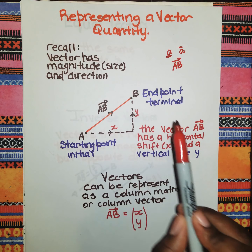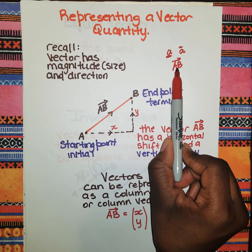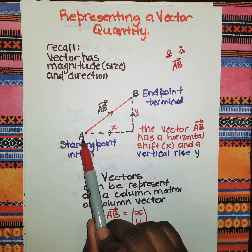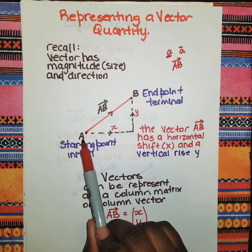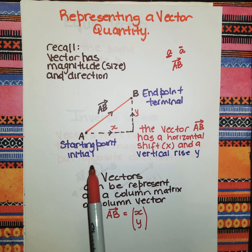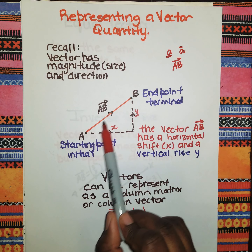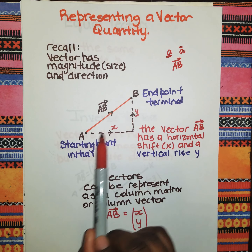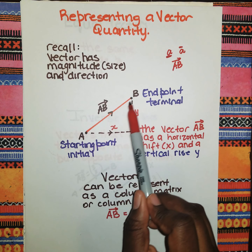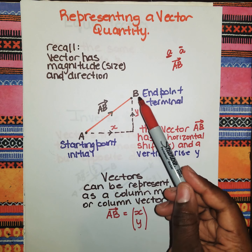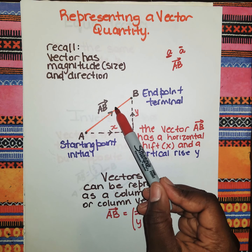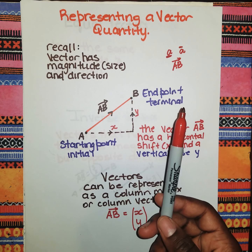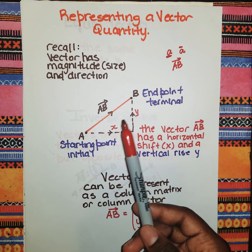Remember, a vector has magnitude and direction. When you see the vector AB, the starting point is the first letter — that's A — and the endpoint or terminal point would be B. So A to B is this length segment, which has a particular magnitude, and the direction is going upwards. You can say vector AB going upwards, or vector BA — the magnitude will be the same but the direction changes.